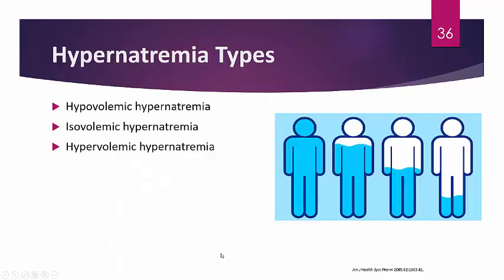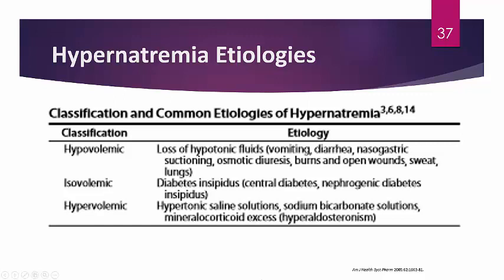For hypernatremia types, there are only three — based on volume status: hypovolemic, isovolemic, and hypervolemic. The Kraft and colleagues article provides classification and etiologies for each. If needed on an exam, these will be provided — don't stress about memorizing every etiology; even in practice these tables are used for differential diagnosis.